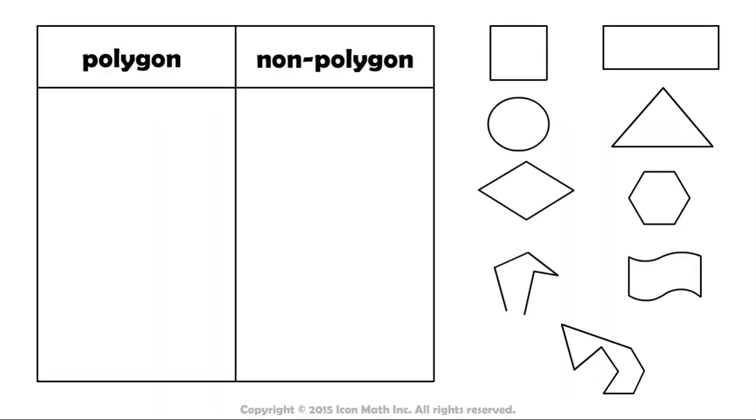Now, let's see which of these shapes are polygons, based on their properties. If we take this square, we notice that all of its sides are line segments, and it is a closed shape. So, it is a polygon. In general, all squares are polygons.